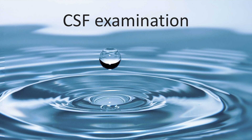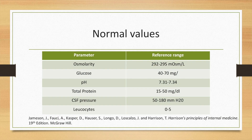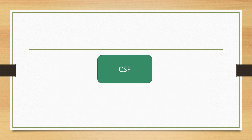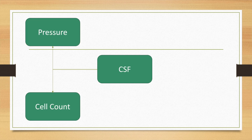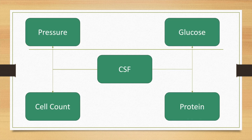Let us now discuss the cerebrospinal fluid examination. This slide shows the normal values for osmolarity, glucose, pH, total protein, CSF pressure, and leukocytes in the cerebrospinal fluid. We will discuss CSF under the following headings: pressure, cell count, glucose, and protein in various pathological conditions.